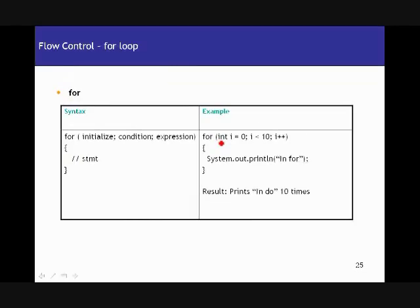The for loop is used for the same reason as a while loop — to execute certain statements repeatedly based on conditions. Looking at the for loop syntax, the first statement has three parts: an initialization, a condition, and an expression. Most of the time, what you initialize is a counter so you can track how many times the statements are being executed.